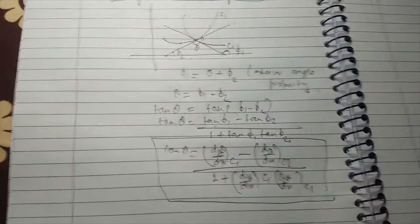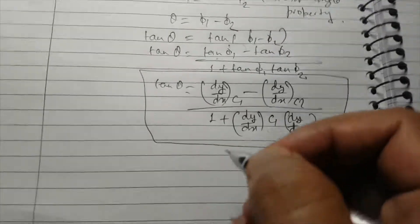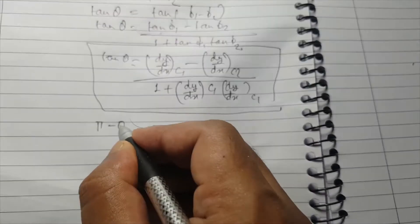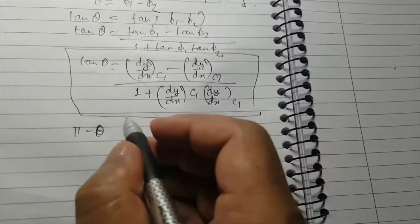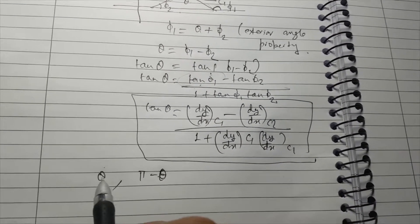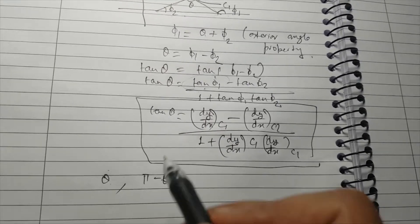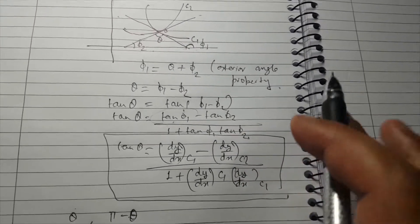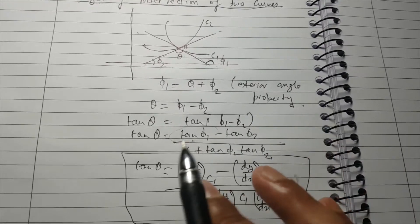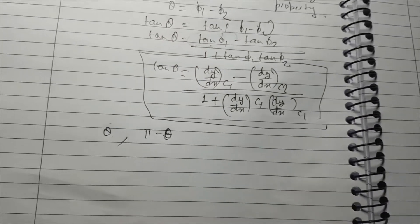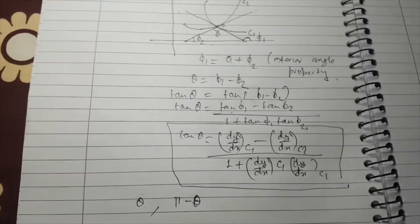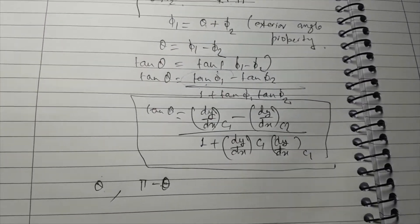You can also see that the second angle between the two tangents is pi minus theta. So we have two angles: theta and pi minus theta. Whichever is smaller between these two, we consider that to be the angle between the curves, because the angle between any two curves is always taken as the smallest of the two angles.